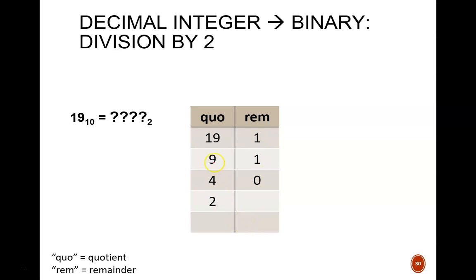9 divided by 2 gives 4 remainder 1. 4 divided by 2 gives 2 remainder 0. 2 divided by 2 gives 1 remainder 0. And, lastly, 1 divided by 2 gives 0 remainder 1. Note that the bottom row of the table will always end up like this, with a 1 in each column.